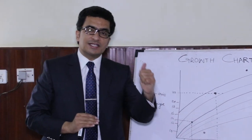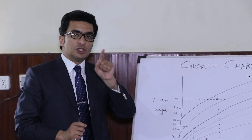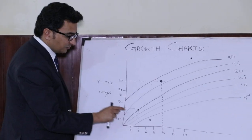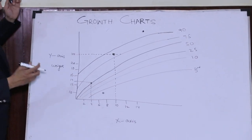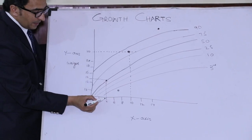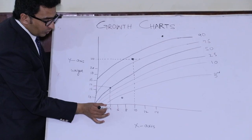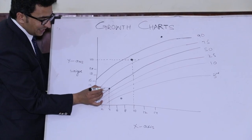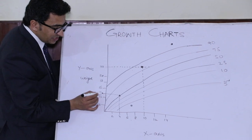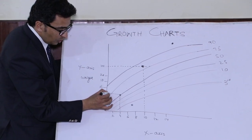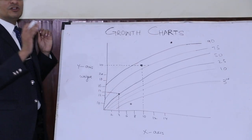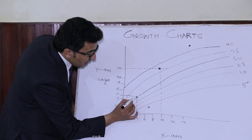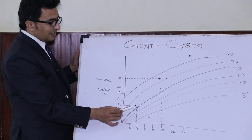Now carefully listen to the examiner — what is the age and what is the weight of your patient. Let's suppose the child is four years old and weighs 14 kg. You need to put a dot from the four-year point going vertically, and then put a dot from the 14 kg point going horizontally. You will then see where these two dots join, and you make a big dot at that intersection.